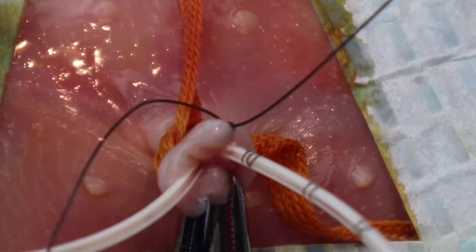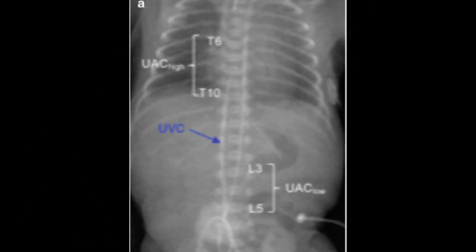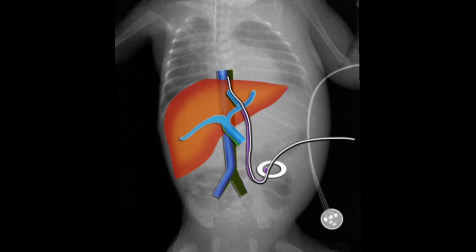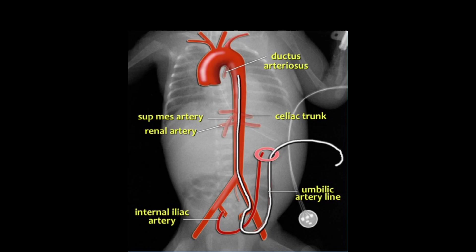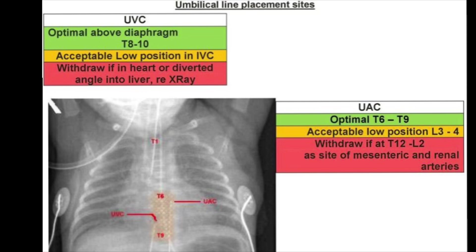Once you reach your desired depth, again, you'll want to check for blood return. At this point, you can put a soft suture in on each of the lines and get your x-ray to confirm placement. To accurately interpret catheter placement on an x-ray, you'll need to know the path the catheter typically takes. The UV goes straight up toward the liver and toward the patient's right side, or the left side of the x-ray, whereas the UA goes down and up and typically lies toward the patient's left, or the right side of the x-ray. Placement is typically optimal with the UVC above the diaphragm at T8 to T10, and the UAC in optimal position at T6 to T9. You can also have low-lying UVCs, which would be L4 to L5, and often UACs are not considered safe in a low-lying position due to the risk of mesenteric and renal emboli.